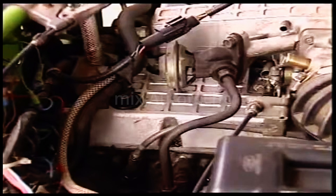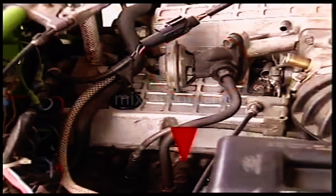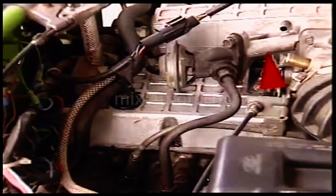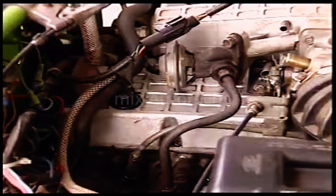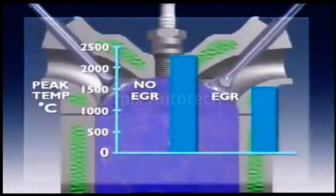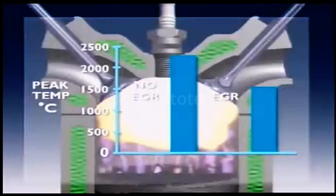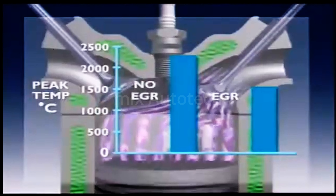If valve overlap is maintained or even increased, oxides of nitrogen can be reduced by an exhaust gas recirculation, or EGR, valve connected between the exhaust port or manifold and the intake system. If engine conditions are likely to produce oxides of nitrogen, the EGR valve opens, letting some gases pass from the exhaust into the intake system. During combustion, these exhaust gases absorb heat from the burning air and fuel, which lowers peak combustion temperatures and reduces the formation of oxides of nitrogen.